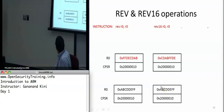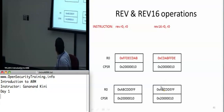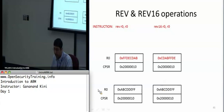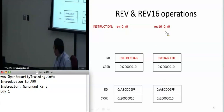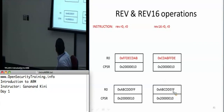Here's an example. If you have REV R0, R0, and R0 is filled with 0xABCDDEFF, then it outputs 0xFFDECDAB — it takes the bytes in reverse order and puts them into R0. Similarly, REV16 keeps the two half-words separate but reverses the bytes within each half-word. So ABCD becomes CDAB and DDEFF becomes FFDE. And REVSH just flips the two bytes of the lower half-word.